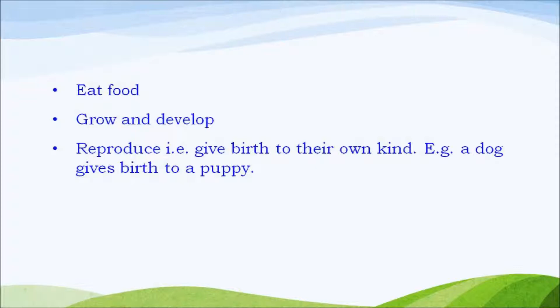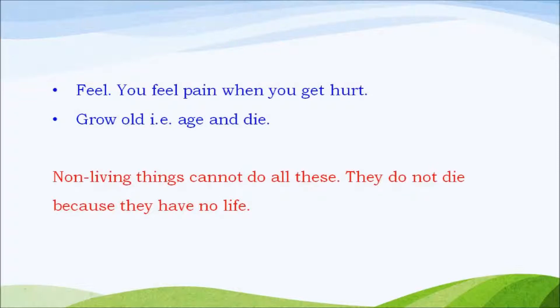Living things reproduce — that means they give birth to young ones of their own kind. For example, a dog gives birth to a small baby dog, that is a puppy. Similarly, baby plants grow from seeds or from other parts of plants. Living things feel pain when hurt. Living things grow old, age, and finally they die.